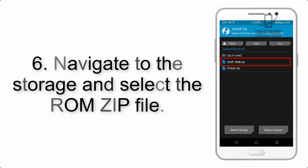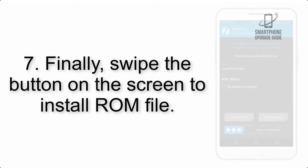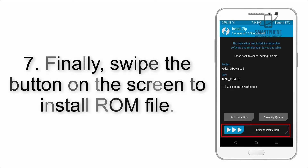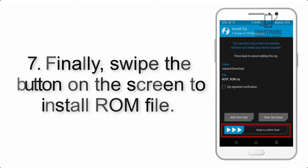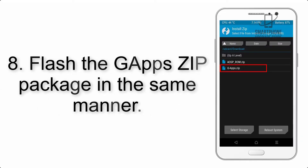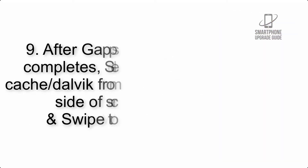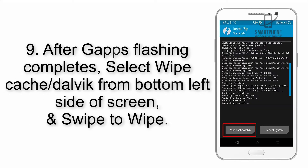Step 6: Navigate to the storage and select the ROM zip file. Step 7: Swipe the button on the screen to install the ROM file. Step 8: Flash the GApps zip package in the same manner.